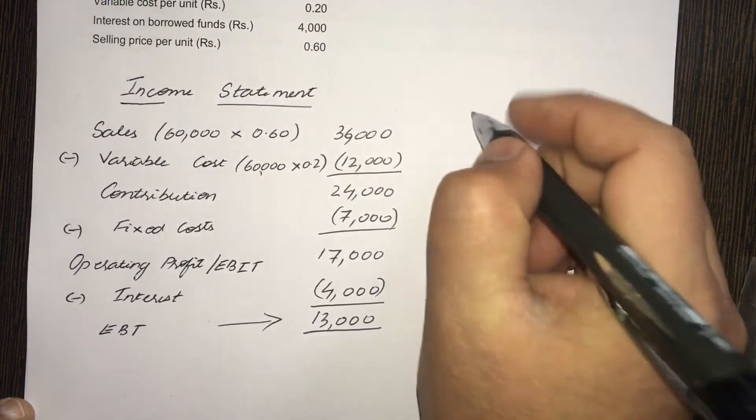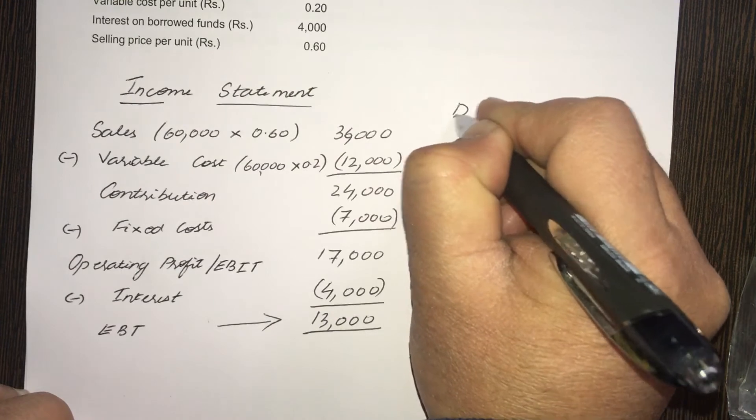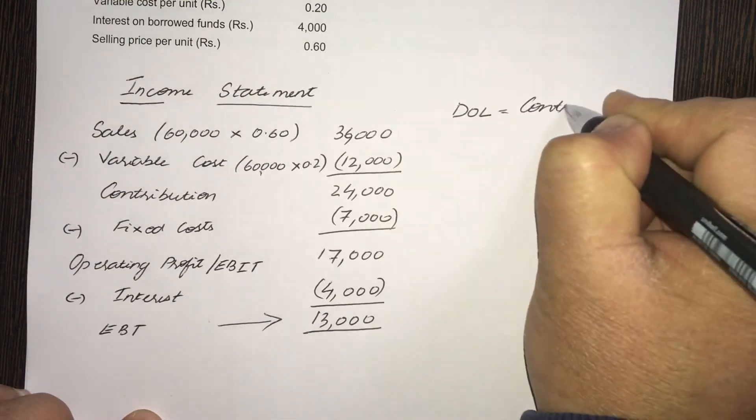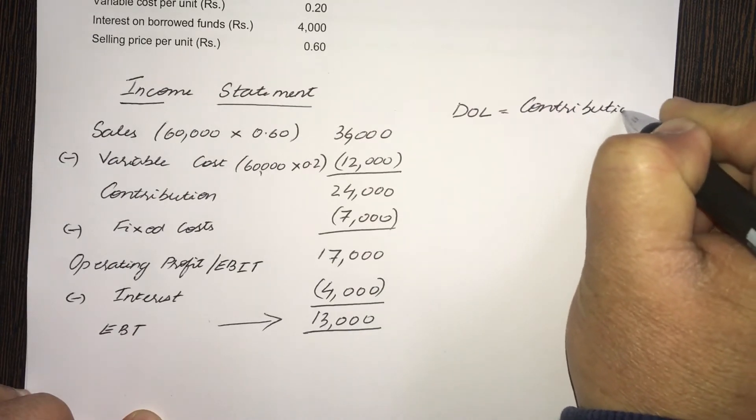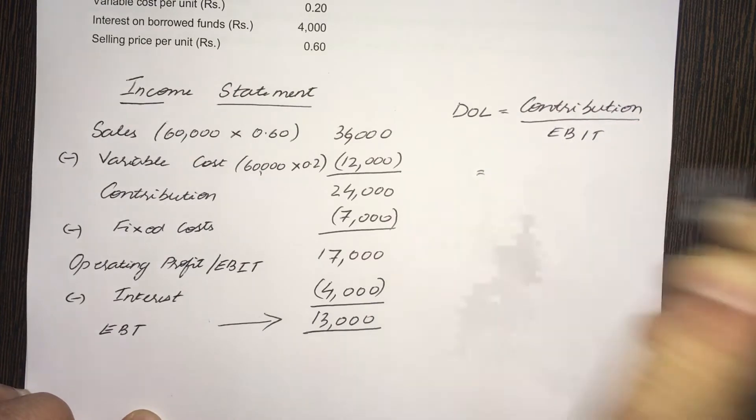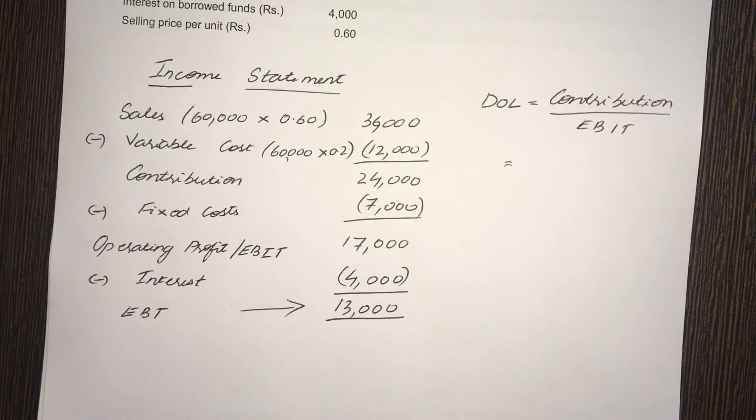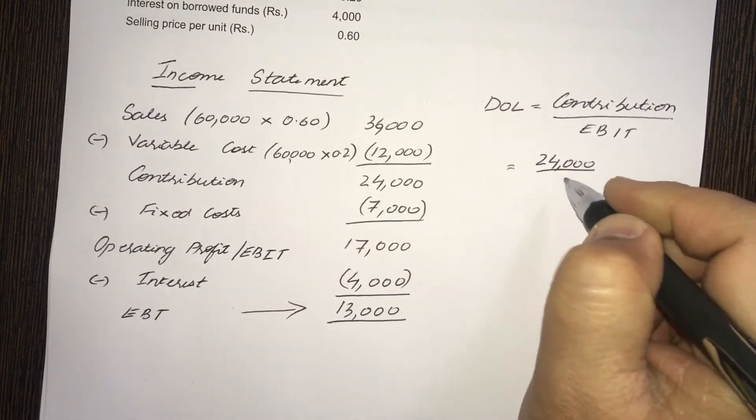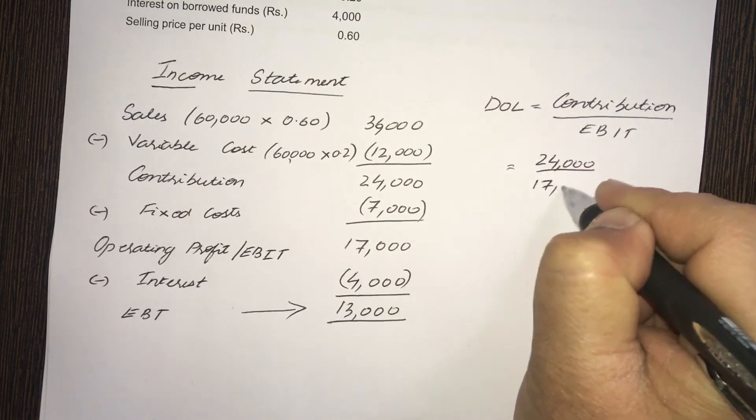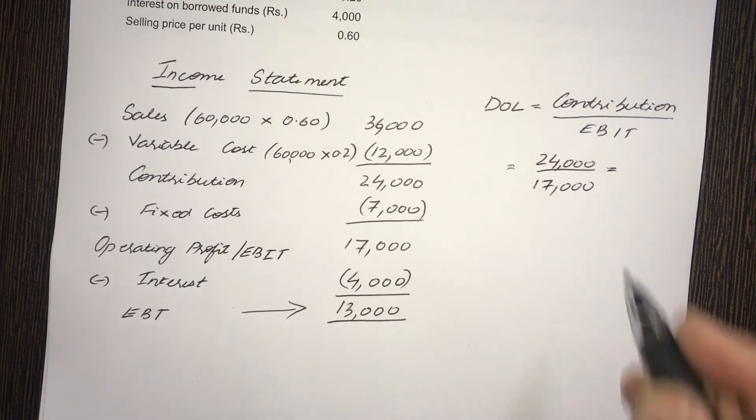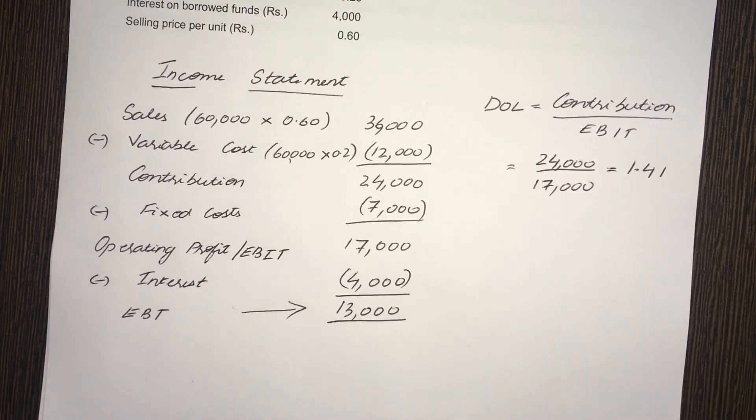Now, the formula for DOL, Degree of Operating Leverage, is contribution divided by EBIT. So, in this case, what is contribution? 24,000 divided by EBIT, which is 17,000. That works out to 24 divided by 17, which is 1.41.